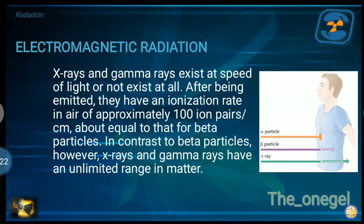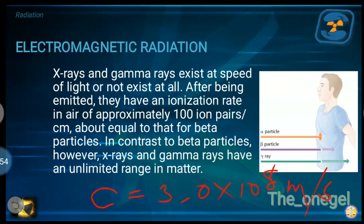X-rays and gamma rays exist at the speed of light or do not exist at all — that is 3.0 × 10⁸ meters per second, or 186,000 miles per second. After being emitted, they have an ionization rate of approximately 100 ion pairs per centimeter, about equal to that for beta particles. In contrast to beta particles, however, x-rays and gamma rays have an unlimited range in matter — they are more penetrating than beta particles.